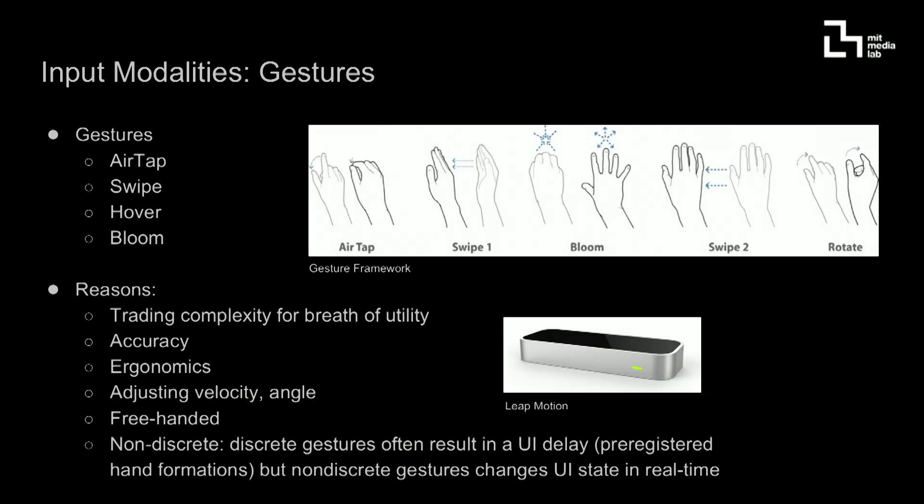Currently I'm playing around with a couple of different input modalities. For gestures, you can use air taps, swipes, hover, and bloom. The way I'm doing that right now is using the Leap Motion controller as an input mechanism. But ideally, for an AR device, you can leverage the AR headset's gesture capabilities. The Leap Motion provides a lot of accurate data for your hand tracking and is very useful in terms of free-handedness.